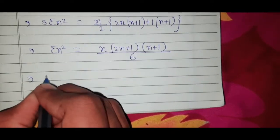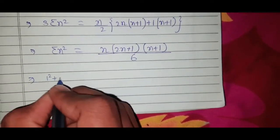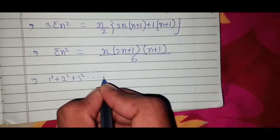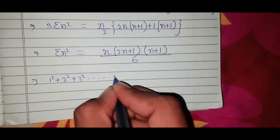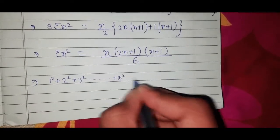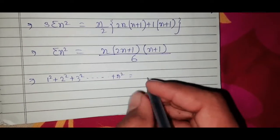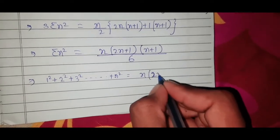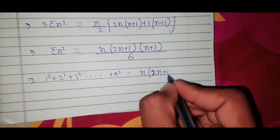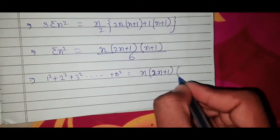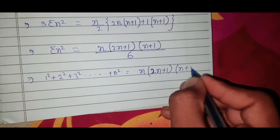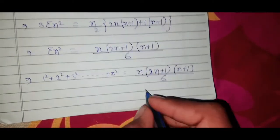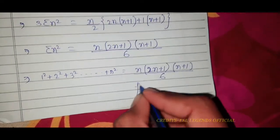Therefore, Σn² = 1² + 2² + 3² + ... + n² = n(2n+1)(n+1)/6. We can also write n+1 first, it doesn't matter. The formula is divided by 6. Finally, we have proved this.